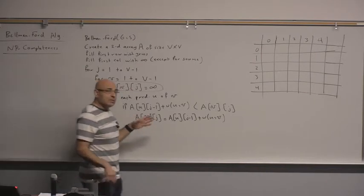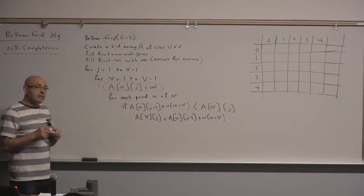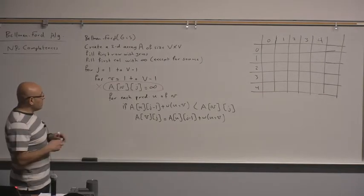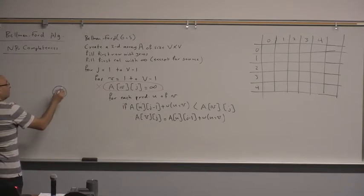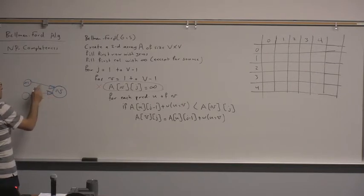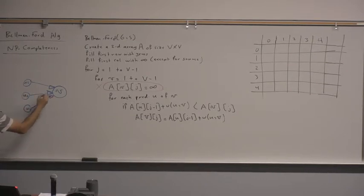Why? Because you are looking for the shortest path. Before you discover a path, the value is going to be infinity. Remember the idea of Bellman-Ford: you are trying to find the best distance for vertex V and you are looking at all the predecessors or incoming edges. For each incoming edge there is a predecessor like U1, U2, U3, and for each one we are looking for the minimum distance.